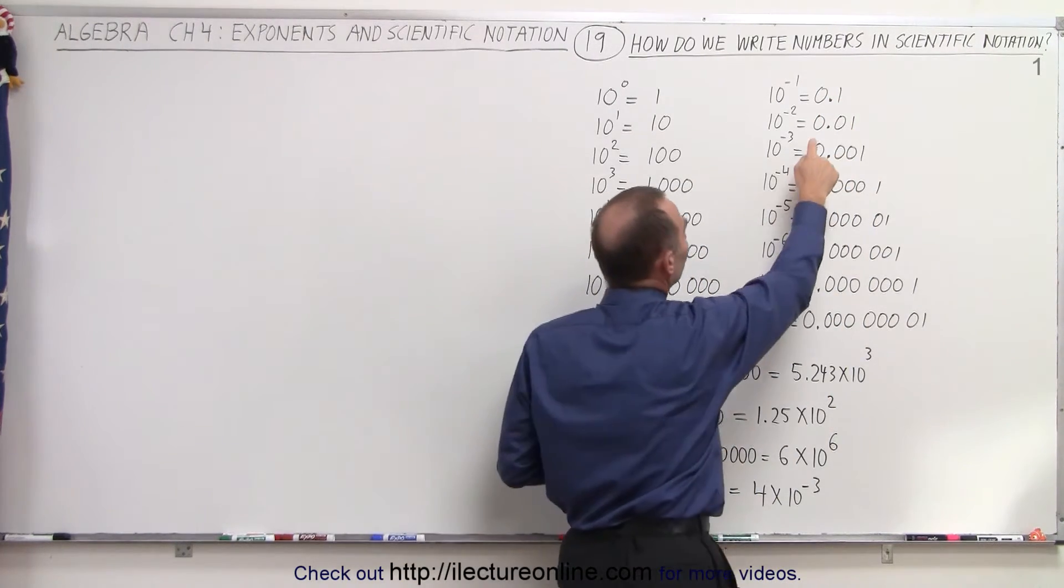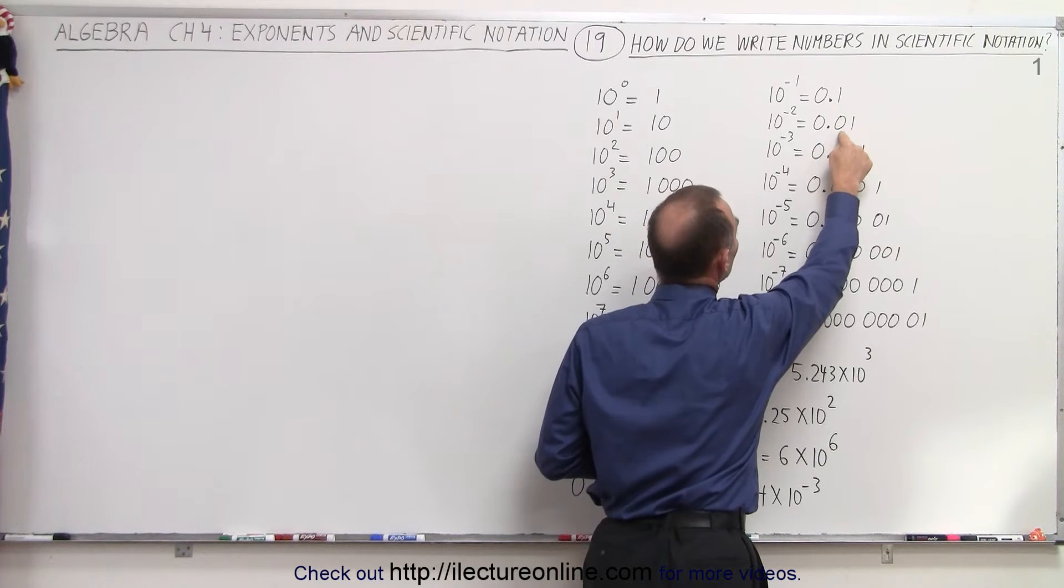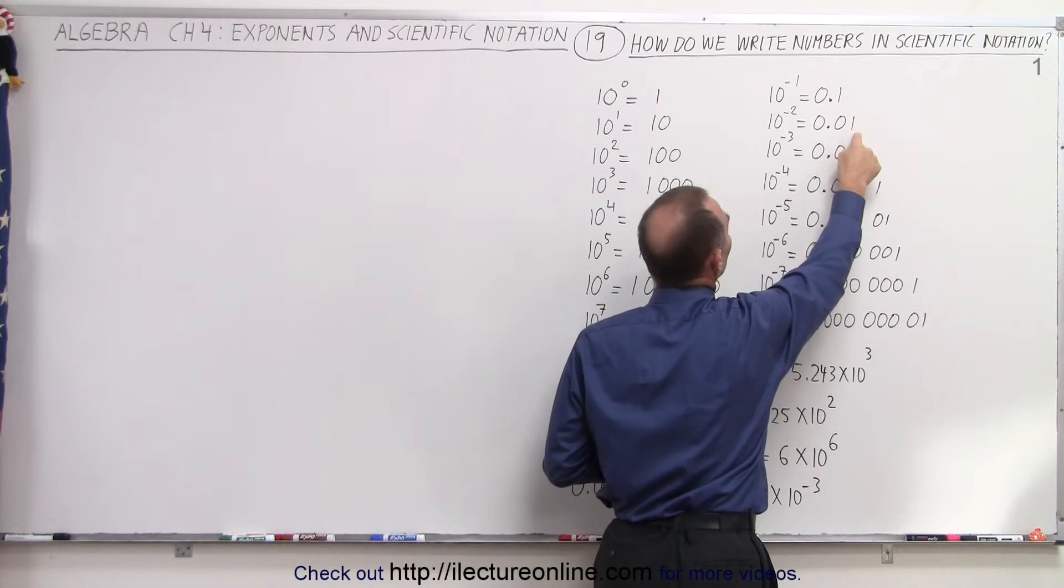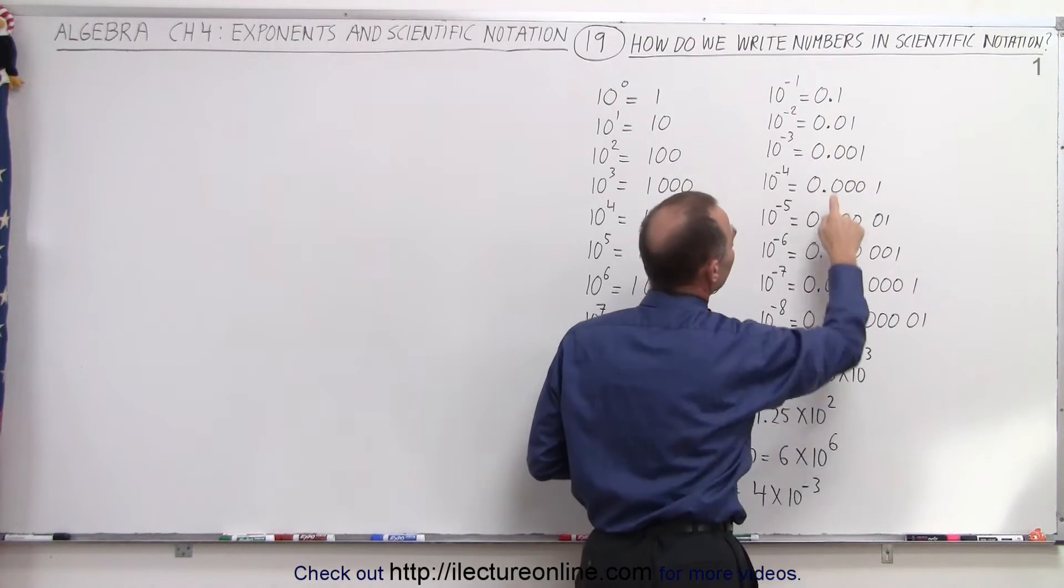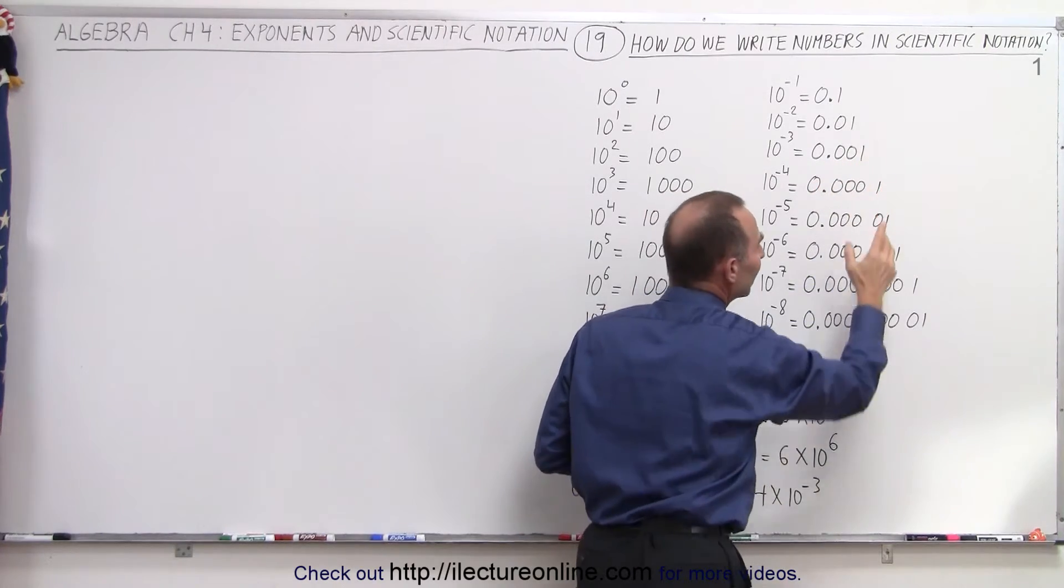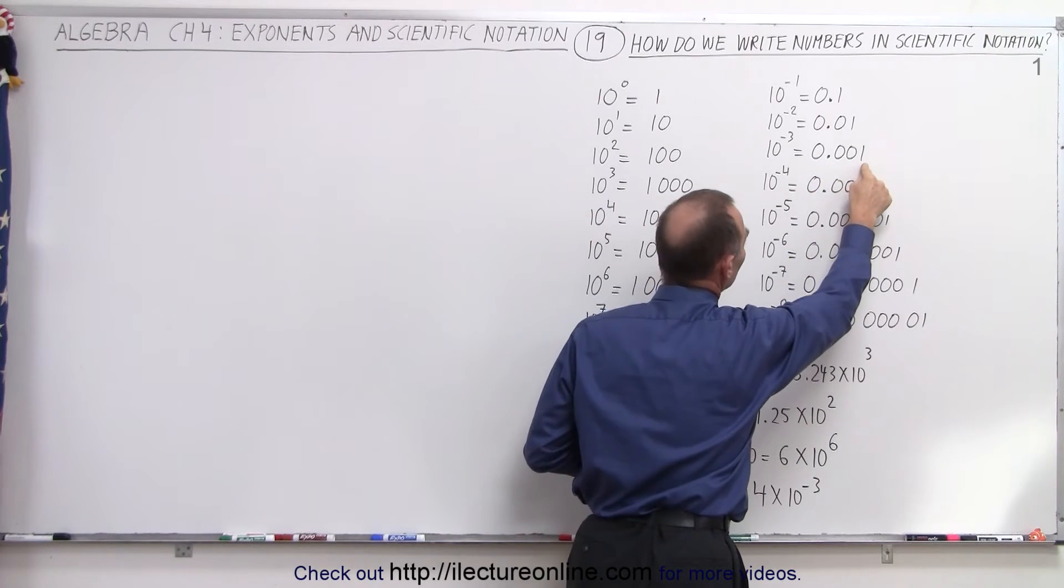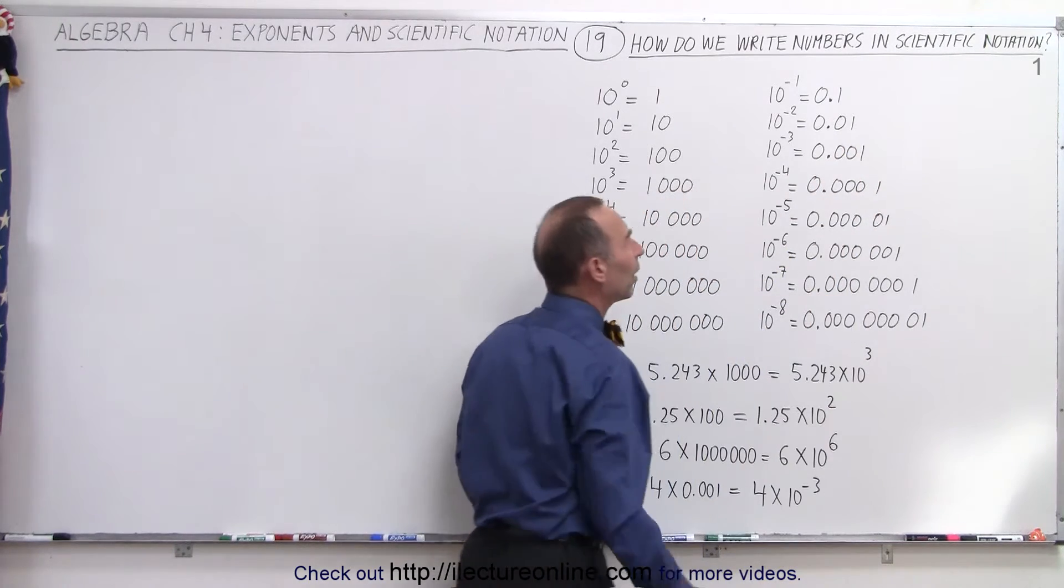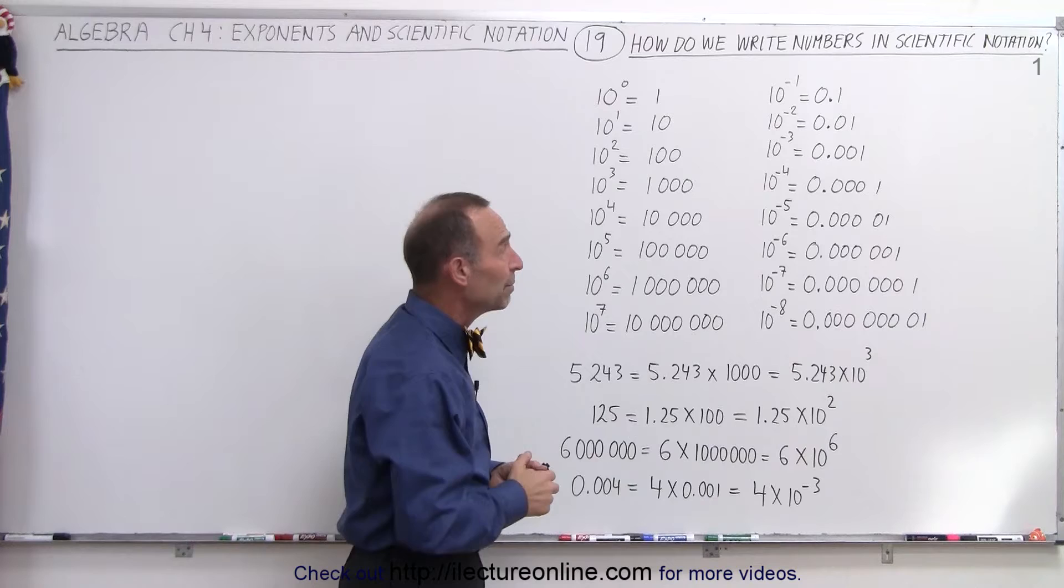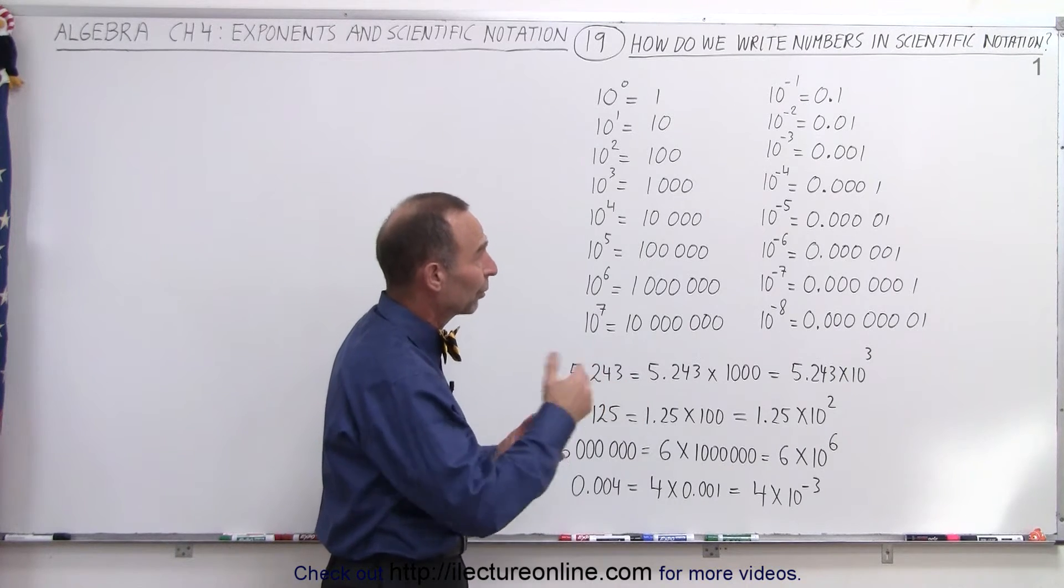When you have 0.01, now you need to move the decimal place over twice and so that's why we have a negative 2 there. Here we need to move the decimal place over three times to get to number 1. So 10 to the minus 3 means if you move the decimal place over three times, you get to number 1. And that's what 10 to the minus 3 means. It means 0.001.